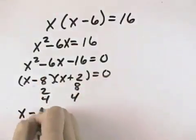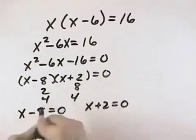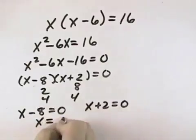So then I'm solving X minus 8 equals 0 and X plus 2 equals 0. Adding 8 to both sides, I get X equals 8.